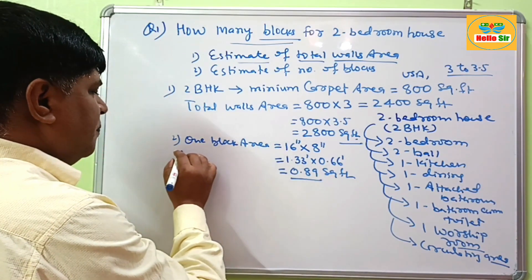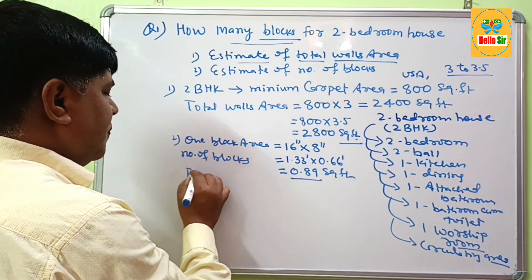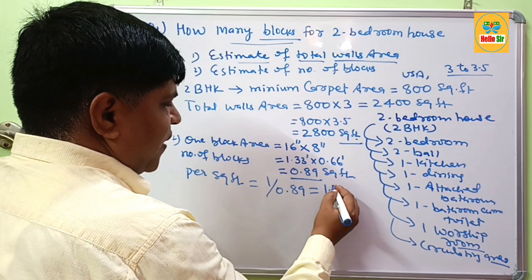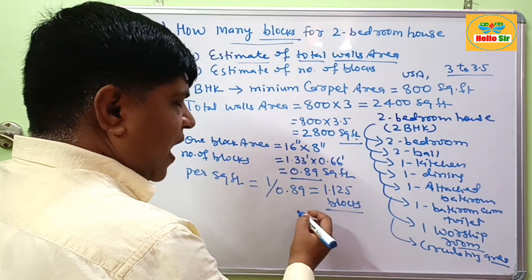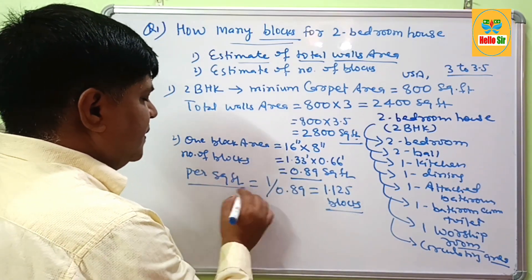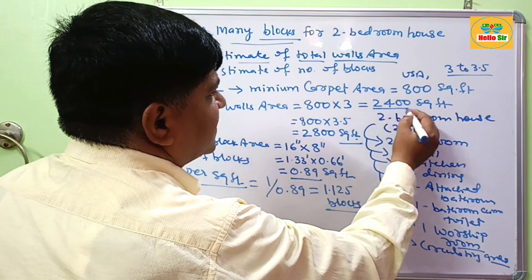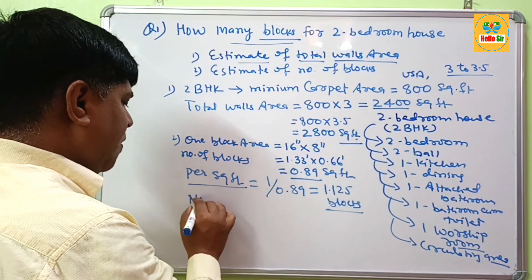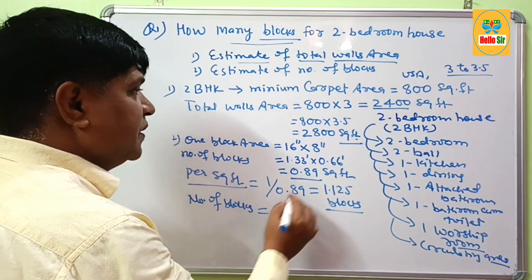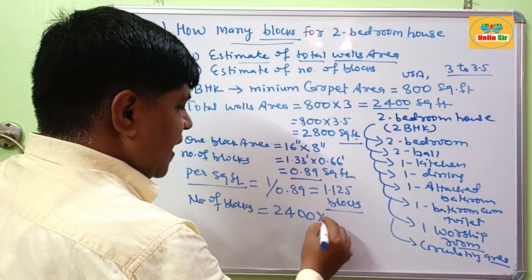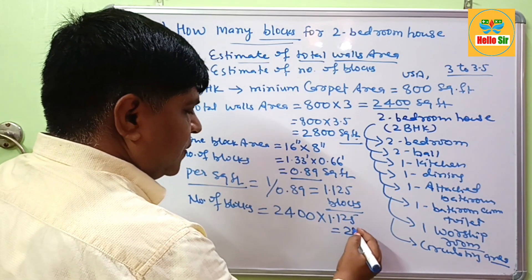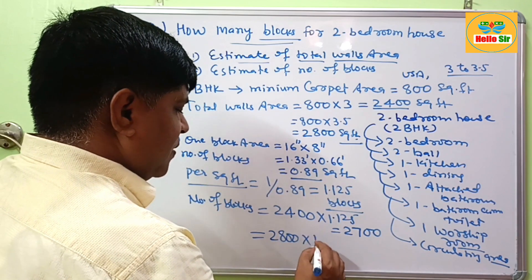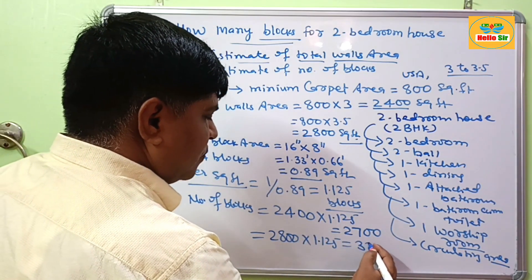The number of blocks per square foot is 1 ÷ 0.89 = 1.125 blocks per square foot. Since the minimum wall area is 2,400 to 2,800 square feet, the number of blocks equals 2,400 × 1.125 = 2,700 blocks, and 2,800 × 1.125 = 3,200 blocks.